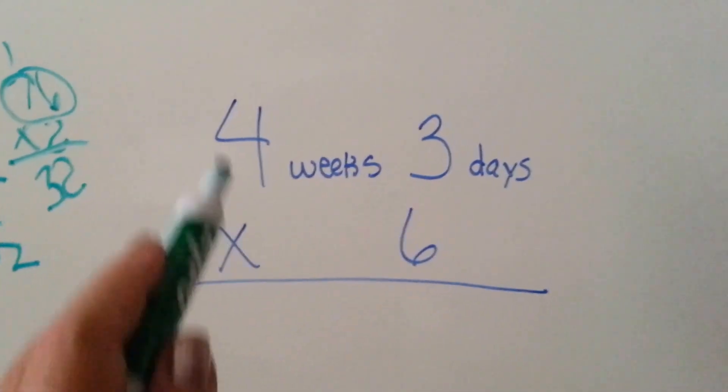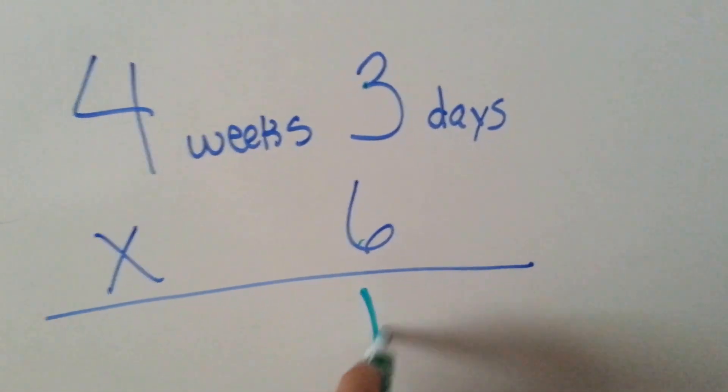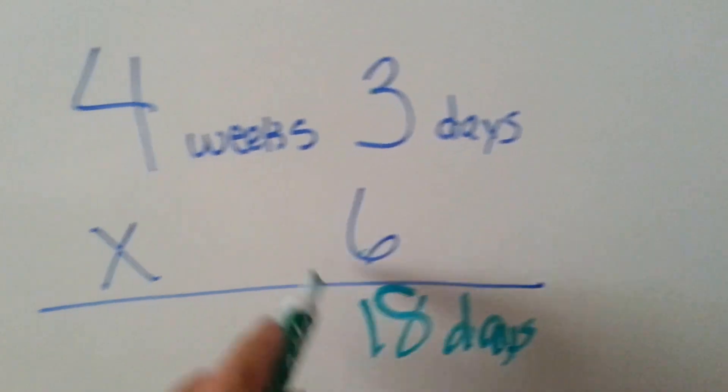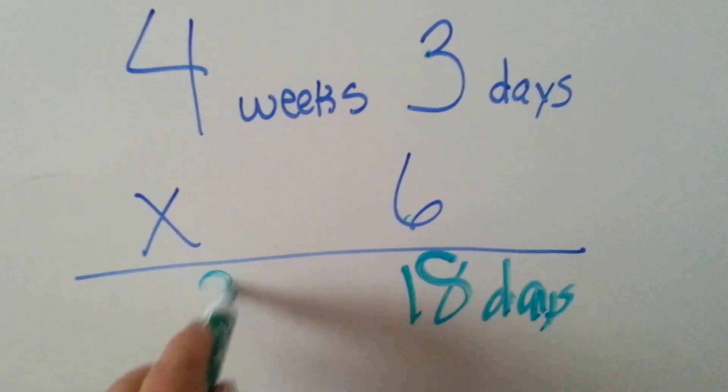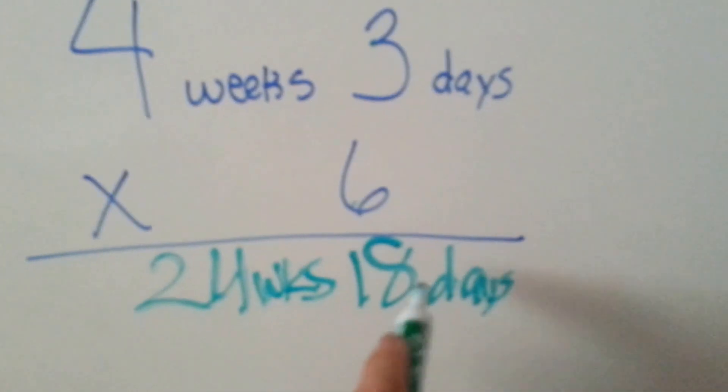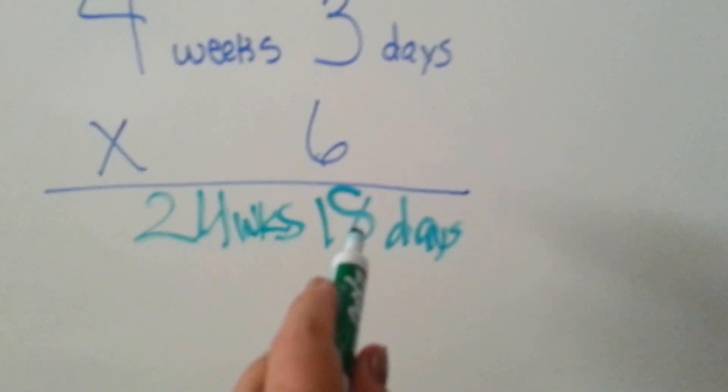Now, if we had 4 weeks and 3 days multiplied by 6, we're going to multiply the days. 6 times 3 is 18 days. 6 times 4 is 24 weeks.